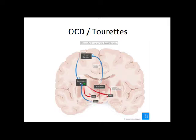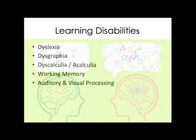Learning disabilities are deficits in the left hemisphere, while autism and ADHD are more deficits in the right hemisphere. Learning disabilities such as dyslexia, dysgraphia, and dyscalculia are deficits in the left hemisphere, where there are specific areas for phonemic awareness and calculations. Working memory and auditory and visual processing involve both sides of the brain working together.